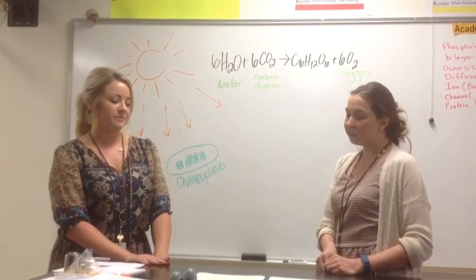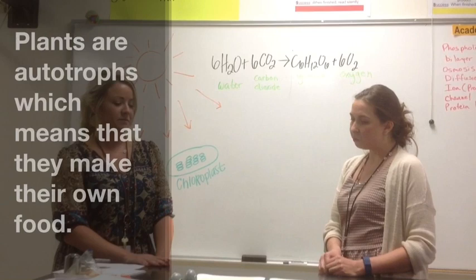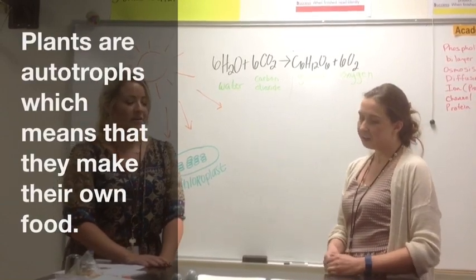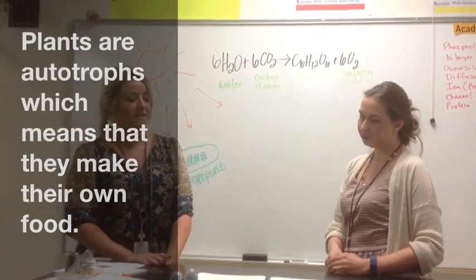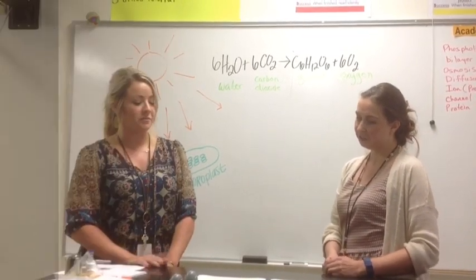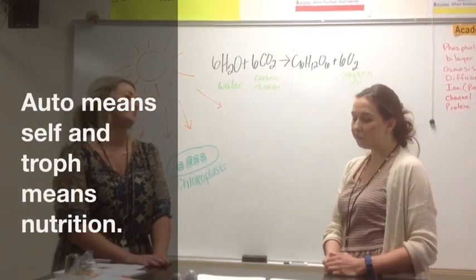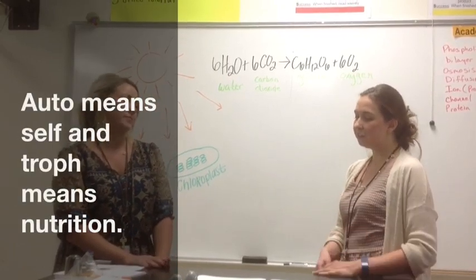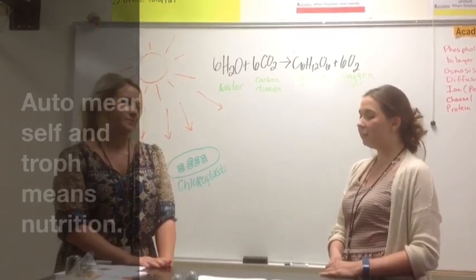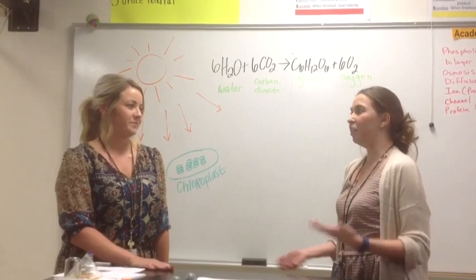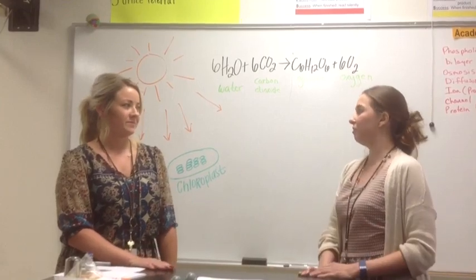Plants are autotrophs, which means they make their own food. Auto means self and troph means nutrition. Therefore, photosynthesis is the way that plants make their own nutrition in order to survive.